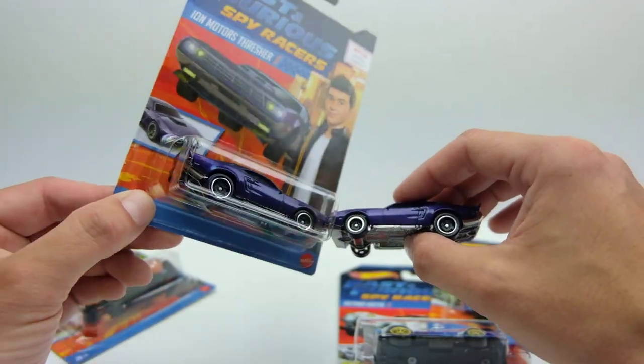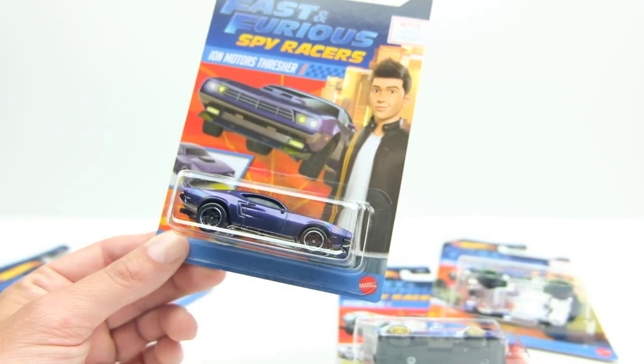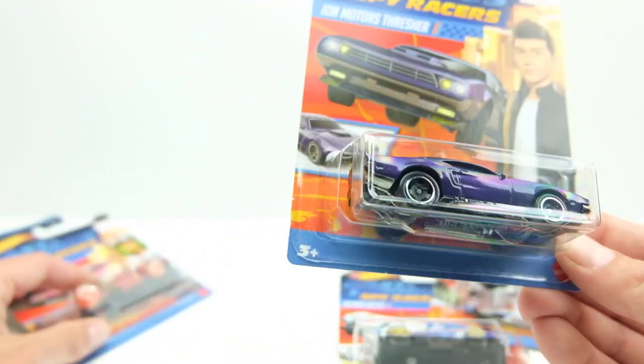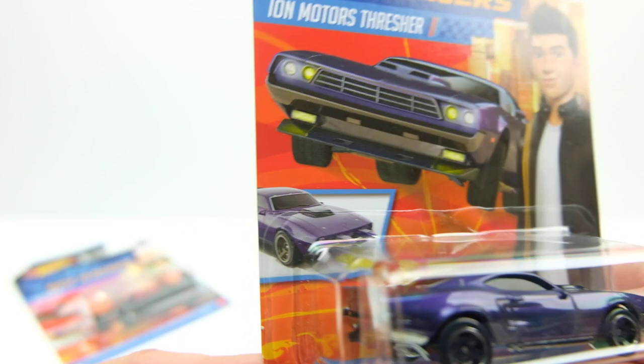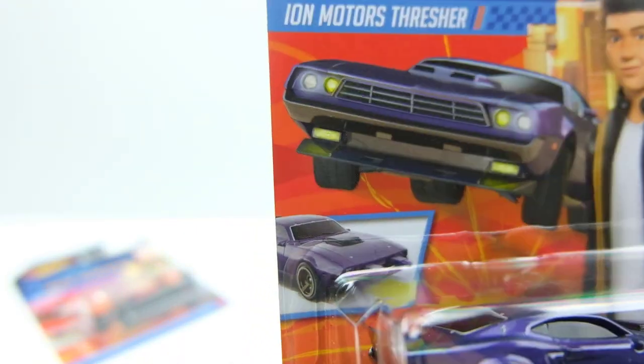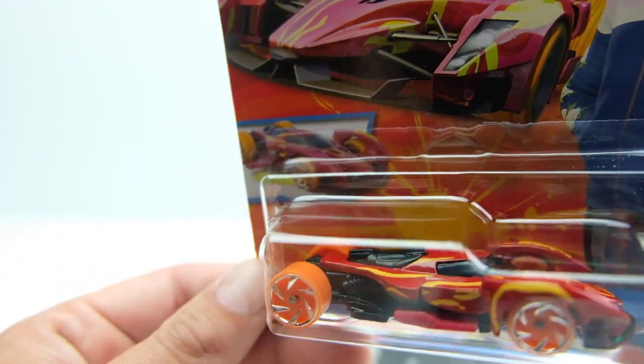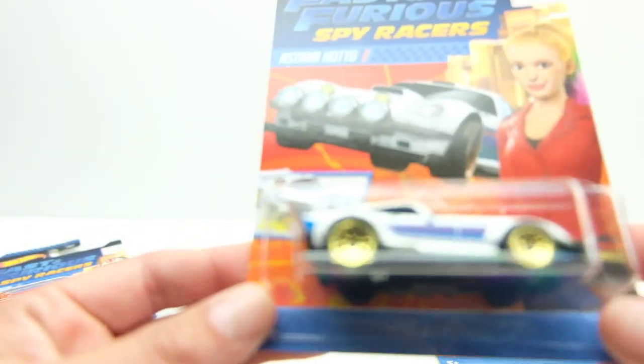But there are a few differences in them and I'm pumped about these. All of these cars have an action. I don't know if you can see that exactly, but machine guns pop out of the front of this car. This one has like the wings fold out almost like the Jet Threat 3.0.